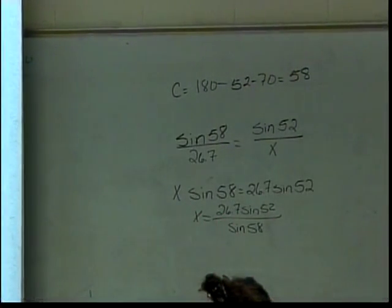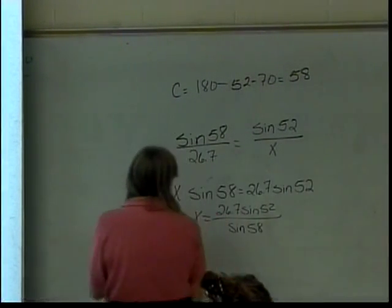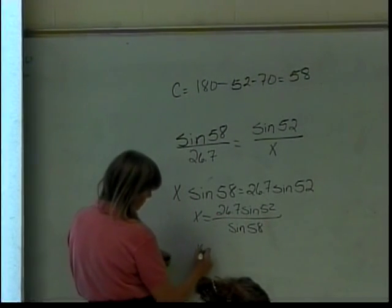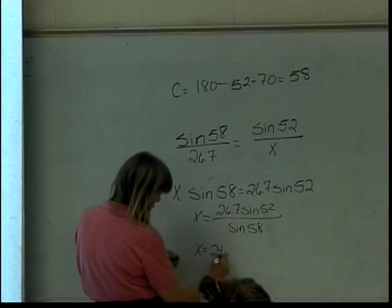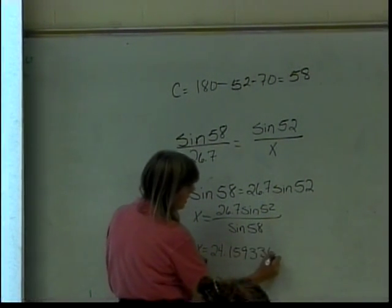Now it would be tempting to tell you, oh, just put this into WebWork like that, but remember, WebWork doesn't do degrees. You have to change every one of these from degrees to radians in order to get WebWork to do it. So it's almost easier just to do it on your calculator. Sine of 52 divided by the sine of 58. So hopefully when you did this, you got that X is equal to 24.15933682. Anybody not get that?